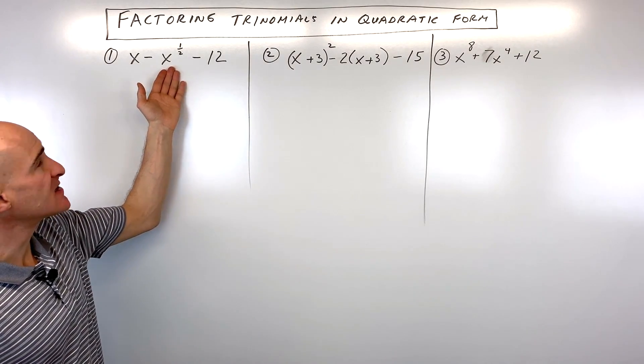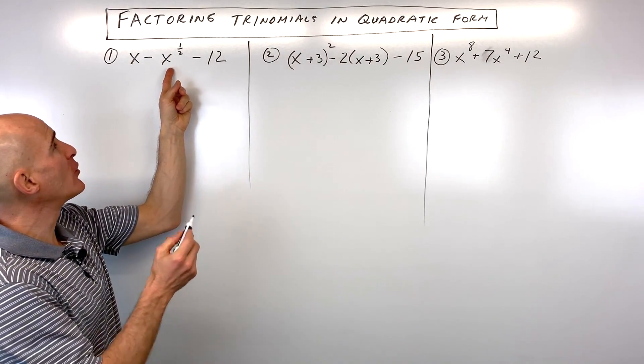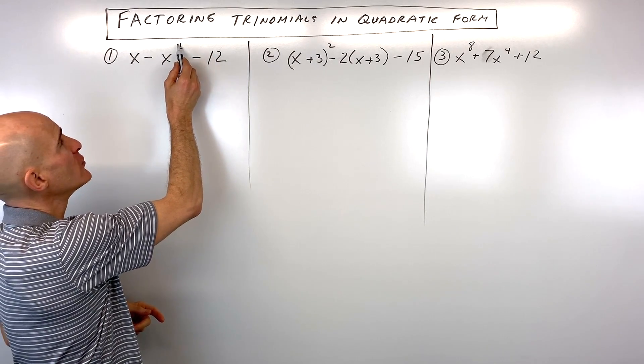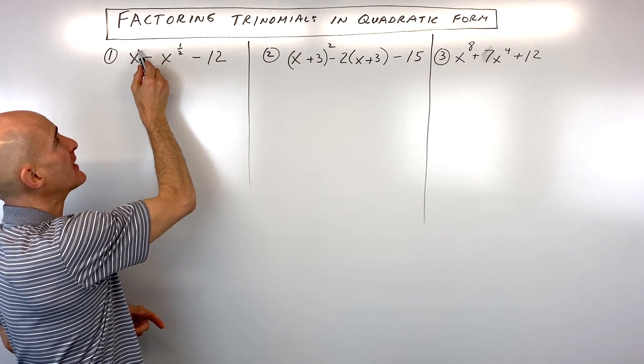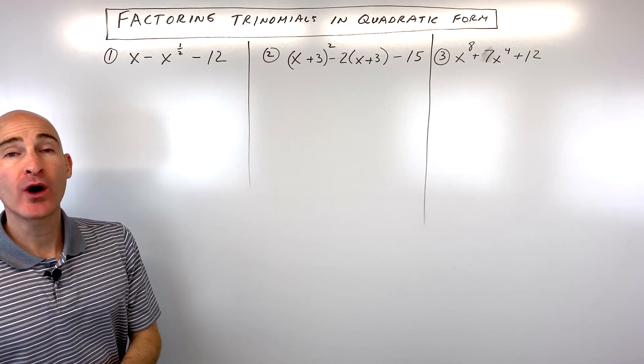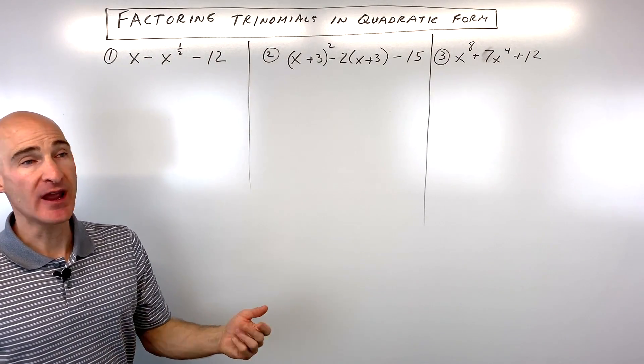So the key is to recognize that it's in that quadratic form, and you can do that by looking at the middle term. If you notice that that middle term's exponent is half of that leading term's exponent, then you know you've got a quadratic trinomial on your hands.